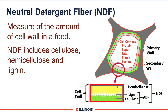Next is neutral detergent fiber, abbreviated as NDF, and that's really the picture of the cell wall. This Pioneer picture shows you a schematic of it, and it will include those layers of cellulose, hemicellulose, and lignin. All three of them are NDF.